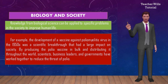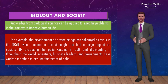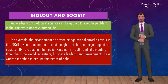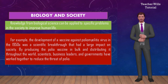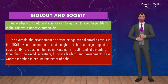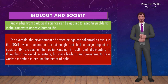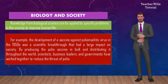And finally, we have biology and society. Knowledge from biological science can be applied to specific problems in society to improve human life. For example, the development of a vaccine against poliomyelitis virus in the 1950s was a scientific breakthrough that had a large impact on society. By producing the polio vaccine in bulk and distributing it throughout the world, scientists, business leaders, and governments worked together to reduce the threat of polio. Through science, humans learn about the natural world, and technology applies this knowledge in new ways.